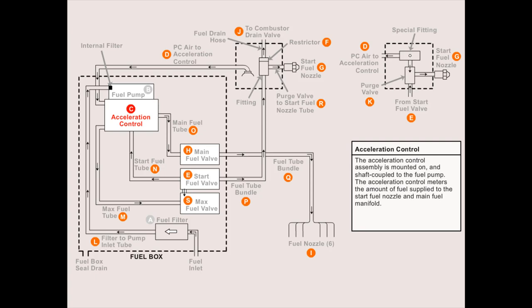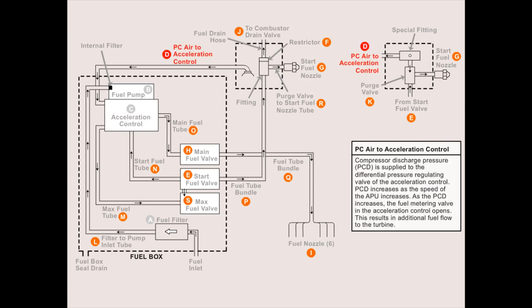The acceleration control assembly is mounted on and shaft coupled to the fuel pump. The acceleration control meters the amount of fuel supplied to the start fuel nozzle and main fuel manifold. Compressor discharge pressure, PCD, is supplied to the differential pressure regulation valve of the acceleration control. PCD increases as the speed of the APU increases. As PCD increases, the fuel metering valve in the acceleration control opens, resulting in additional fuel flow to the turbine.